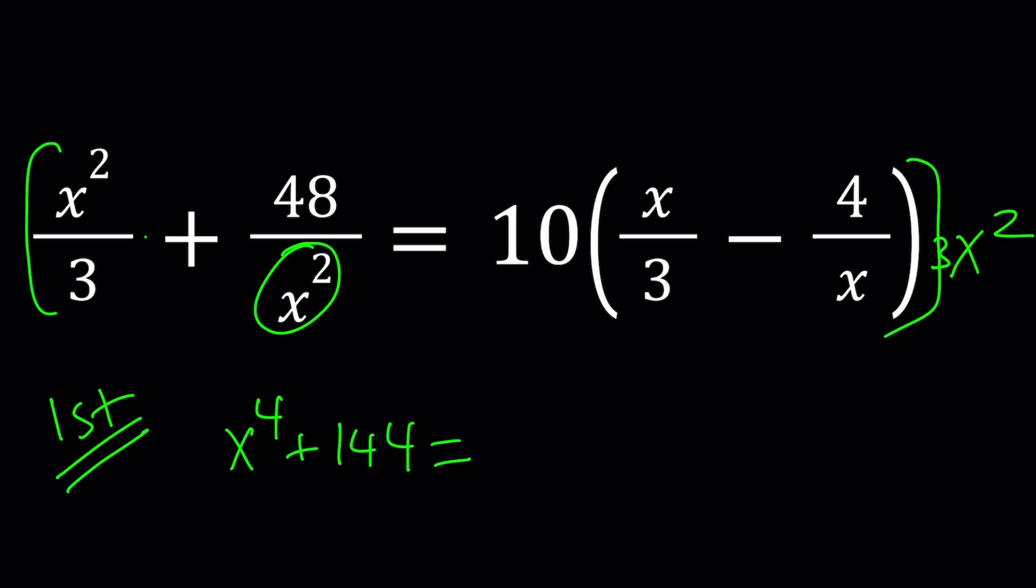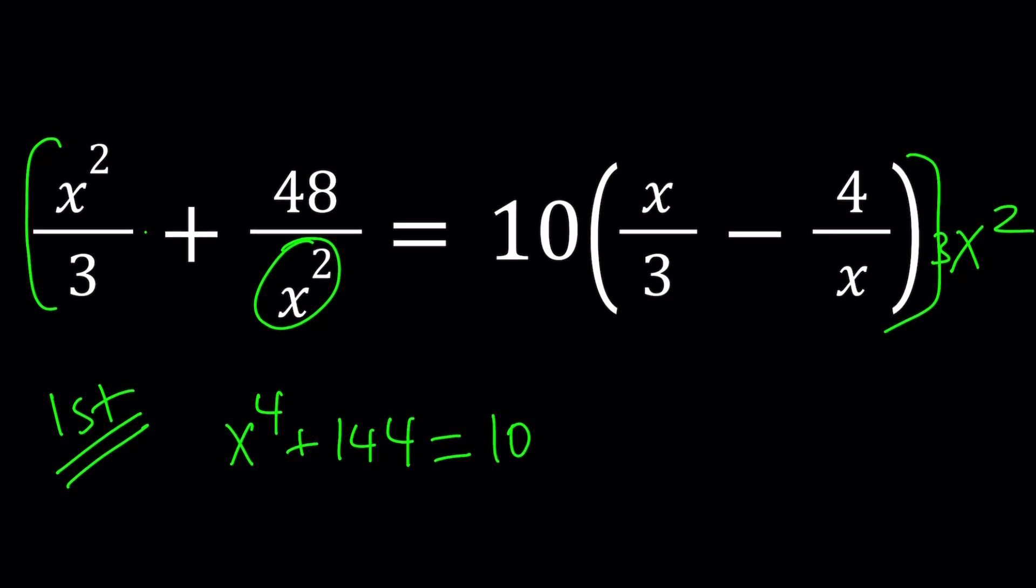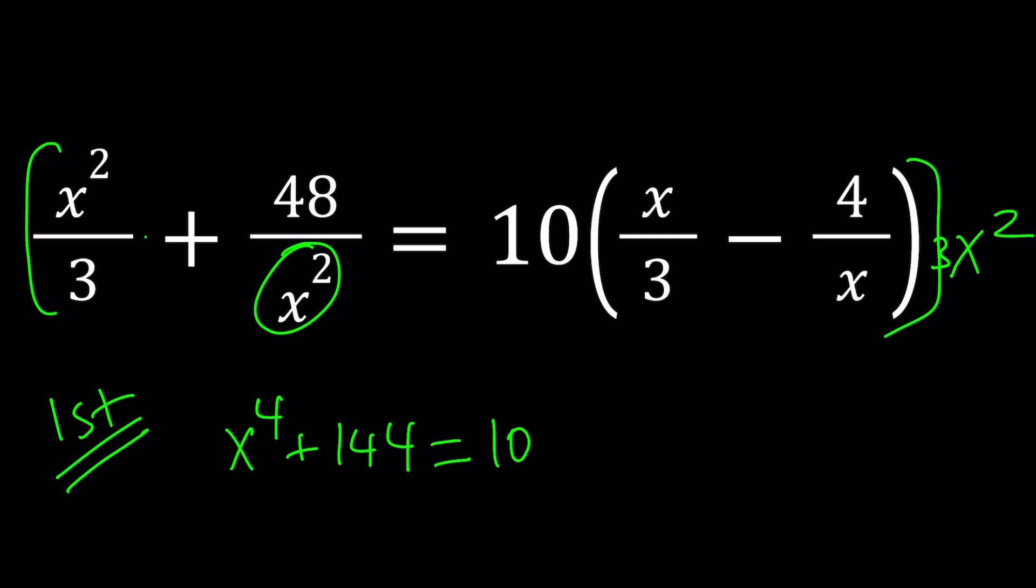And on the right-hand side, when you distribute, just keep the 10. When you distribute the 3x squared, the 3 is going to cancel out. You're going to end up with x squared times x, which is x cubed minus here x squared 4 over x multiplied by 3 over x squared. The x is going to cancel out. And we're going to have 3x in the numerator. And that'll be 12x.